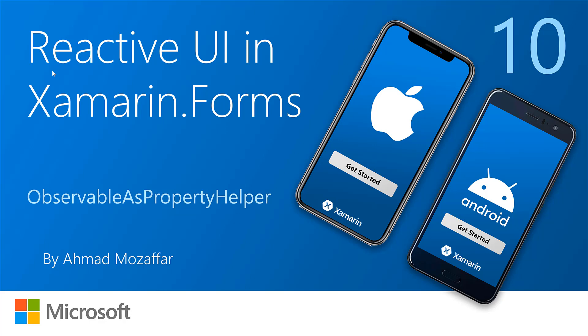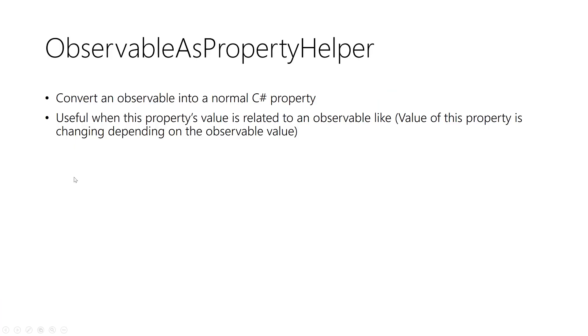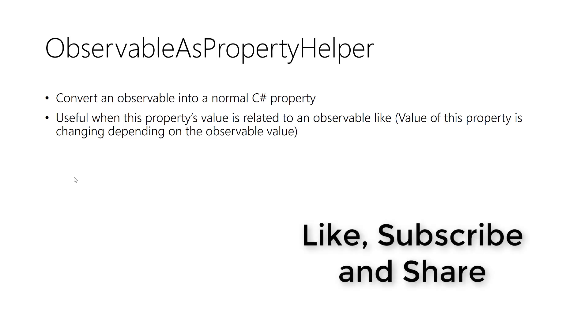Hello everyone and welcome back to AK Academy and the 10th session in Reactive UI in Xamarin Forms. Today in this session we are going to talk about Observable as Property Helper. So let's get started. First, what is Observable as Property Helper? Actually it is a type provided by Reactive UI.